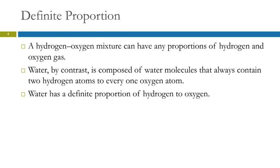We've talked about the law of definite proportions. This hydrogen-oxygen mixture, if we just mix the two gases, we could have any proportions of hydrogen and oxygen. It could be half and half, a little bit of hydrogen, lots of oxygen. It could be any ratio.